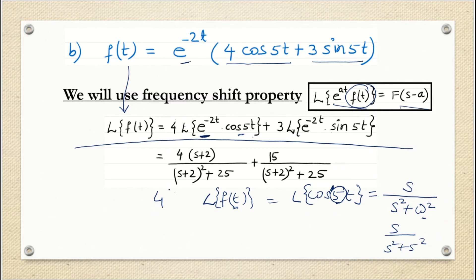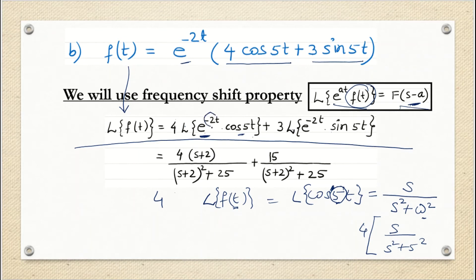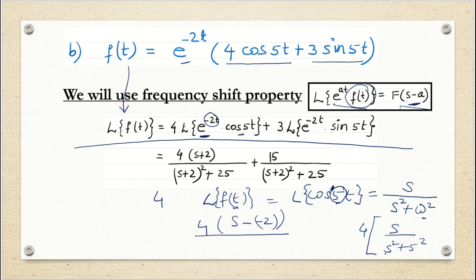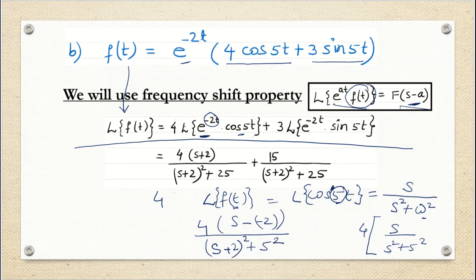The second step is to apply the frequency shift. Wherever you find s, shift it by a. Here a = −2 (from e^(−2t)). So s becomes s − (−2) = s + 2. The numerator becomes s + 2 and the denominator becomes (s + 2)² + 25. So the result for the cosine term is 4(s + 2)/[(s + 2)² + 25].